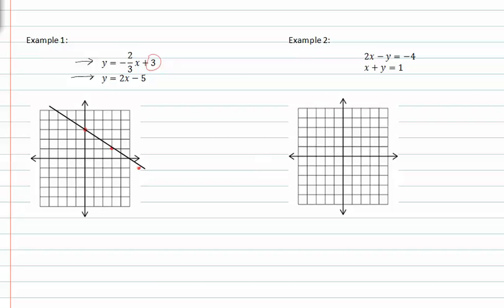For our second line, we have a y-intercept at negative five, so right here. And a slope of two over one. So rise is two, run is one.